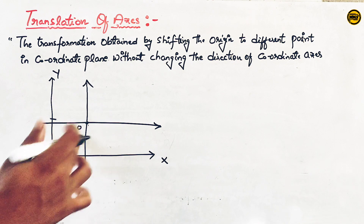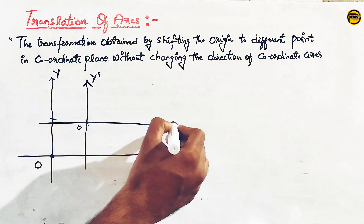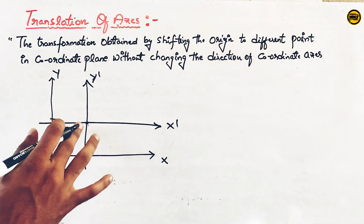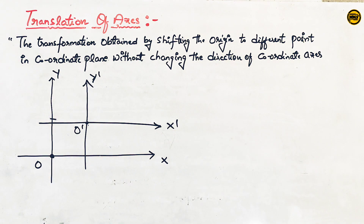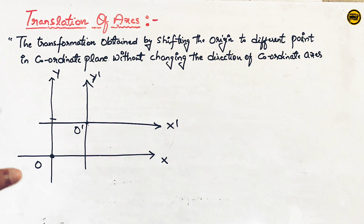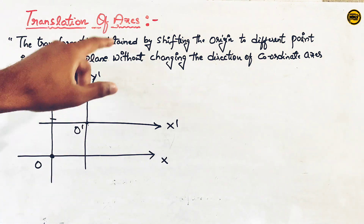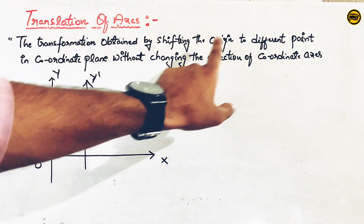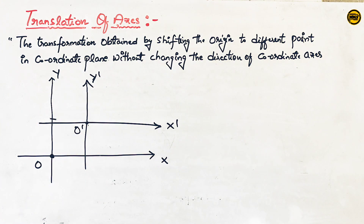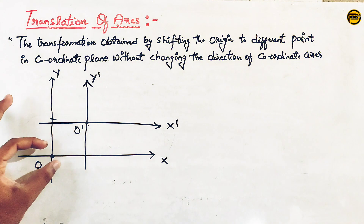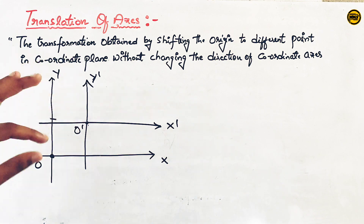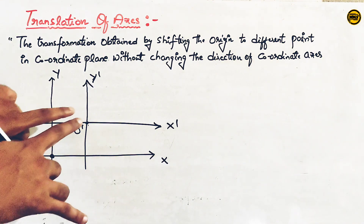We have the origin, and we have x-dash and y-dash axes. When we shift the origin to a different point in the coordinate plane, the position of the axis also changes automatically. Shifting the origin is the key concept for translation of axes.